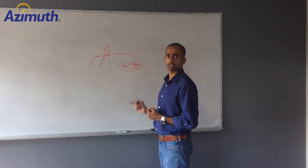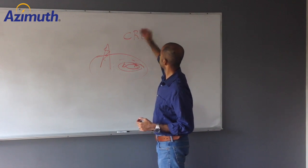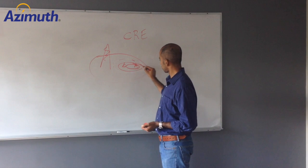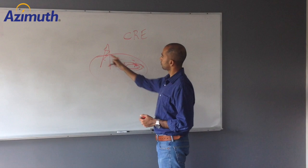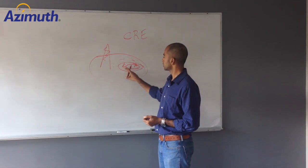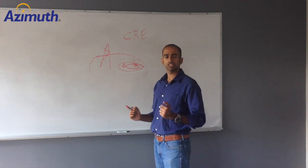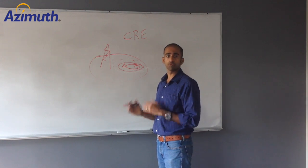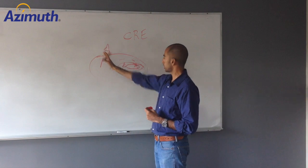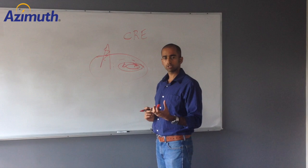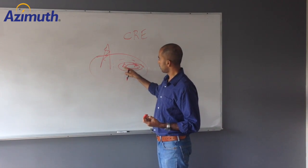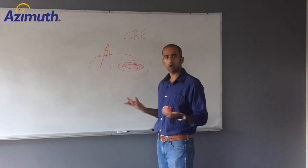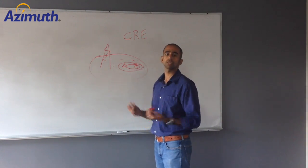Before we look at ABS, we need to talk about the concept of Cell Range Extension, or CRE. The concept is simple: I have a device in the presence of a macro cell and a small cell, and the device falls outside the coverage of the small cell. Instead of having this device hang on the macro cell, I use an artificial offset to tell the device to stick to the small cell. One of the fundamental challenges is that a device in the cell range extension region may have better SINR from the macro cell than from the small cell.